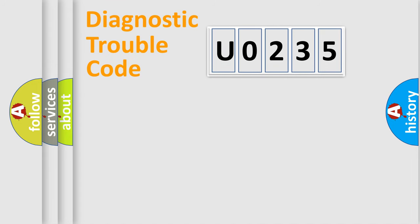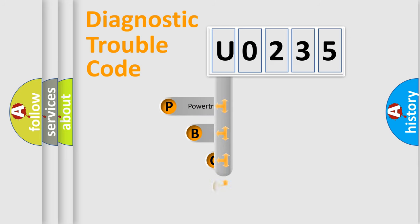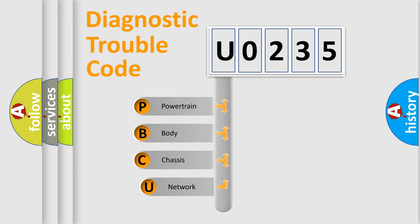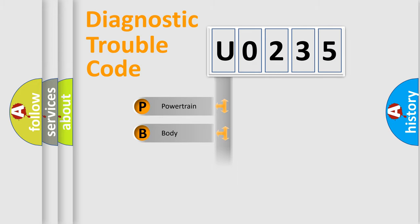Let's do this. First, let's look at the history of diagnostic fault code composition according to the OBD2 protocol, which is unified for all automakers since 2000. We divide the electric system of an automobile into four basic units: Powertrain, Body, Chassis, and Network.